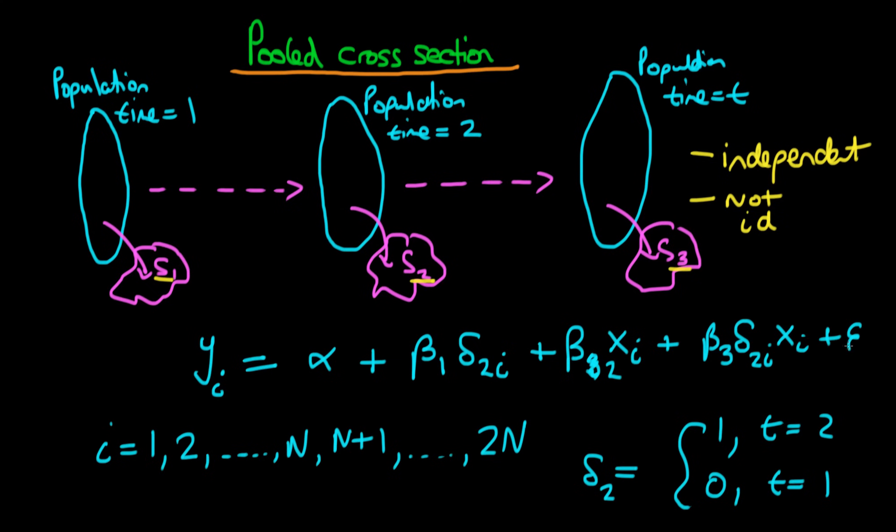The idea with pooled cross-sectional OLS is that we just do ordinary least squares on this particular equation here. We essentially stack all of our observations on top of one another and estimate this model. This is quite different, I should say, from the method we're going to use in studying panel data, but I wanted to introduce pooled cross-sectional models because it's sort of a bridge between cross-sectional models and panel data, which we're going to discuss in future videos.